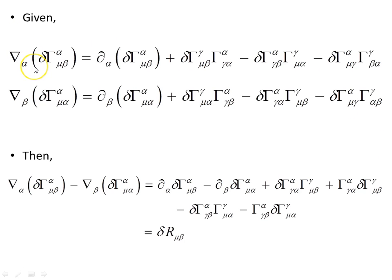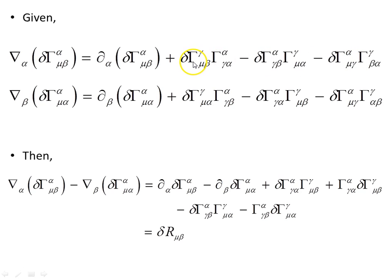Looking at those first two partial derivatives, they suggest the difference between two covariant derivatives, and indeed that turns out to be the case. We can say the variation of the Ricci tensor is these two covariant derivatives subtracted from one another. Relabeling an index gives the term needed for the action integral given earlier, so we need to relabel some indices in terms of μ and ν.